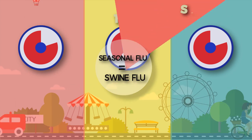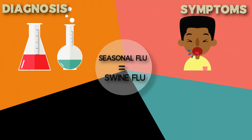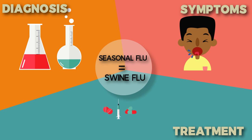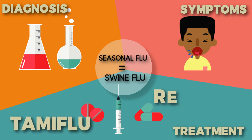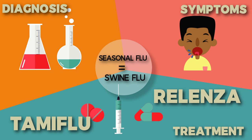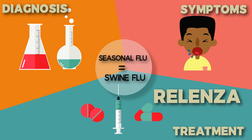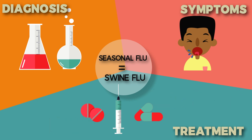Even if someone gets infected, what are the treatments? Swine flu is similar to seasonal flu, and the same antiviral drugs used to treat seasonal flu work against H1N1. Commonly used drugs like Tamiflu and Relenza work best. Antibiotics won't help, simply because this flu is caused by a virus and not by bacteria.